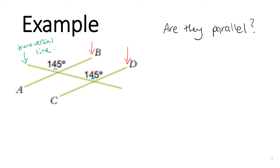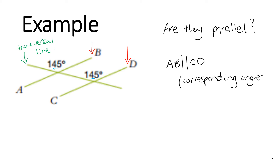These two angles are corresponding angles. Because we have two corresponding angles that are equal — both 145 degrees — we can say that line AB is parallel to line CD. Our reason for that is corresponding angles. The parallel sign is just two lines like that, so we write: AB is parallel to CD.